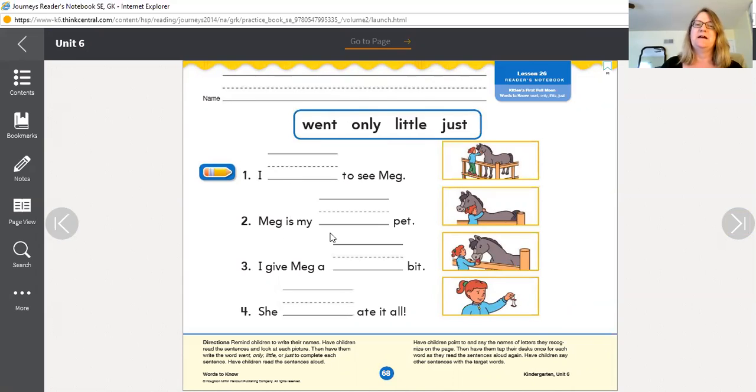Meg is my blank pet. Meg is my blank pet. Now really, there's a couple that could make sense here. But we only use one word once.